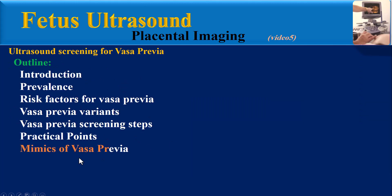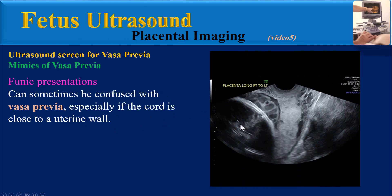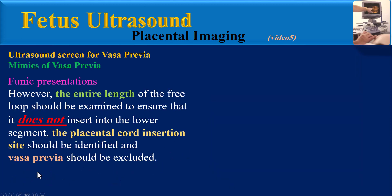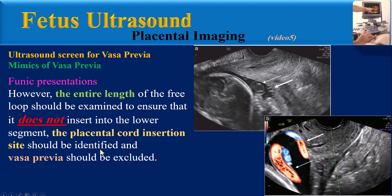Mimics of Vasa Previa: a cord presentation can sometimes be confused with Vasa Previa, especially if the cord is close to the uterine wall. If the patient coughs or if the fetus moves, a free loop of cord will move when the amniotic fluid shifts, allowing the cord presentation to be differentiated from Vasa Previa. However, the entire length of the free loop should be examined to ensure that it doesn't insert into the lower segment, and the placental cord insertion site should be identified to exclude Vasa Previa.